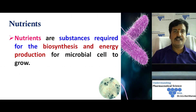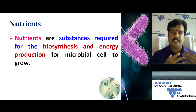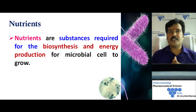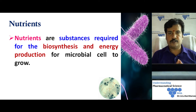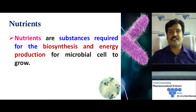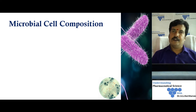For example, the genetic material of bacteria is concentrated at a particular location in the cytoplasm, whereas in a eukaryotic cell like a human cell, the genetic material is surrounded by a nuclear membrane. That is why we call bacteria a prokaryotic cell — it doesn't have a well-defined membrane structure for its internal organelles. Now, let us understand what is meant by a nutrient.